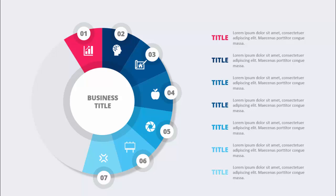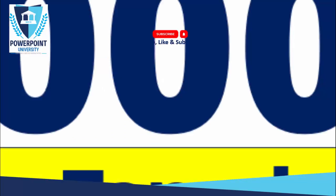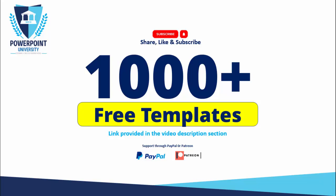In today's tutorial I'm going to show you how to create a pie chart with seven options. I've added a business title in the center with a different color combination for seven options along with icons, and on the right side you can add the title and detailed text. Please share, like, and subscribe to my channel — the only channel on YouTube for PowerPoint where you can get 1000-plus free templates absolutely free. I've provided the link in the video description and you can support my channel through PayPal or Patreon.